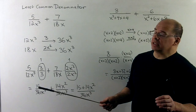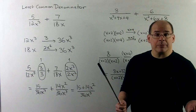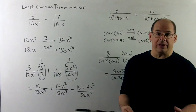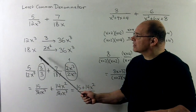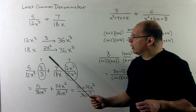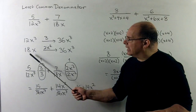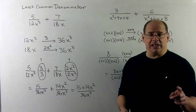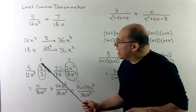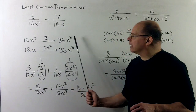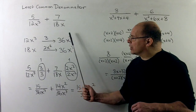Now an example closer to the checklist: 5 over 12x³ plus 7 over 18x. The denominators don't match, so we need a least common denominator. For the numerical part, 12 and 18 both roll up to 36. For the variable part, x³ can stay; x rolls up to x³ by multiplying by x². So the LCD is 36x³. To match: multiply the first fraction by 3/3 and the second by 2x²/2x².